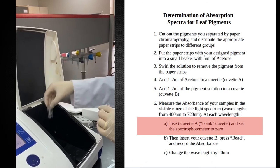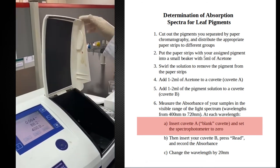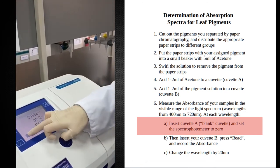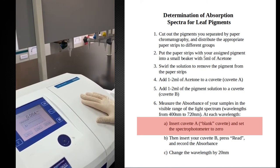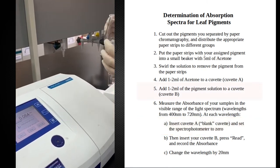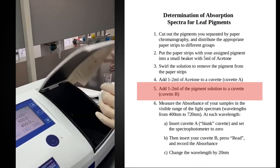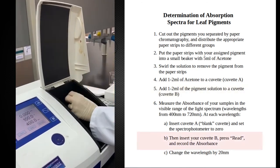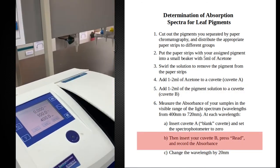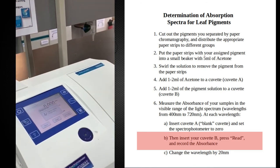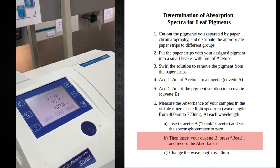So this cuvette contains acetone only. I'm going to calibrate my spectrophotometer. And I have put in this cuvette chlorophyll A. I will take the measurements of chlorophyll A at 400 nanometer. The absorbance is 0.11.